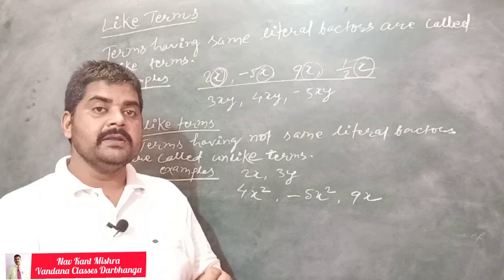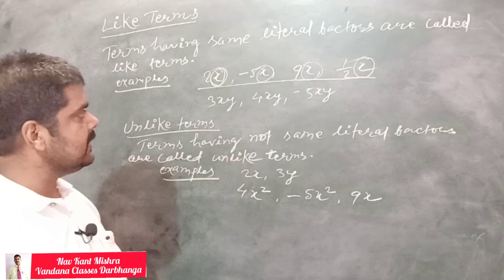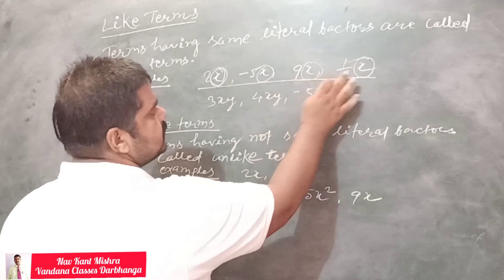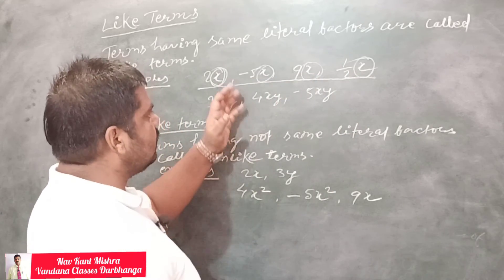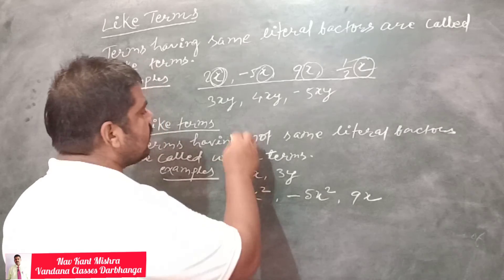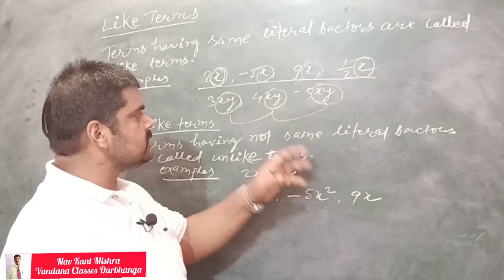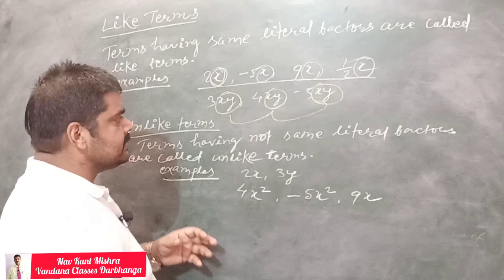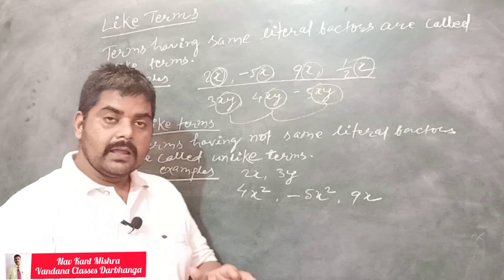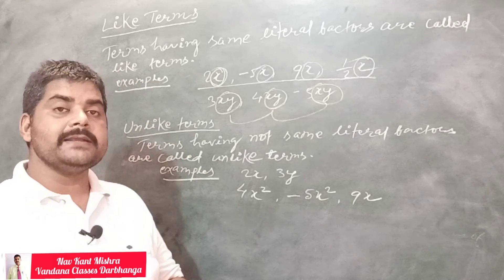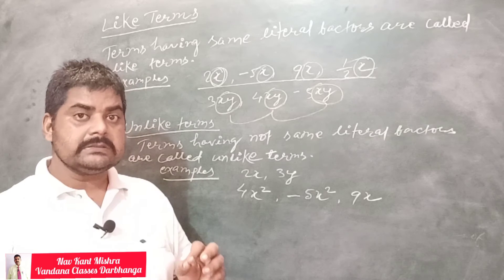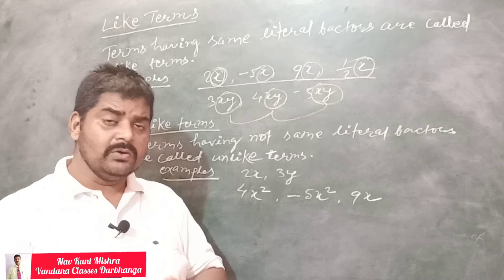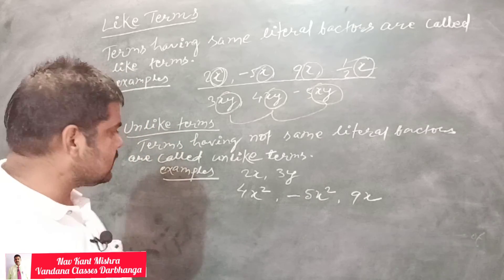If two or more terms have the same literals, they are called like terms. For example, you can see that four terms all having the same literals — this is why they are called like terms. Similarly, terms like xy, xy, xy share the same literals and are therefore like terms. Just the opposite applies to unlike terms: if two or more terms have different literals, they are known as unlike terms.